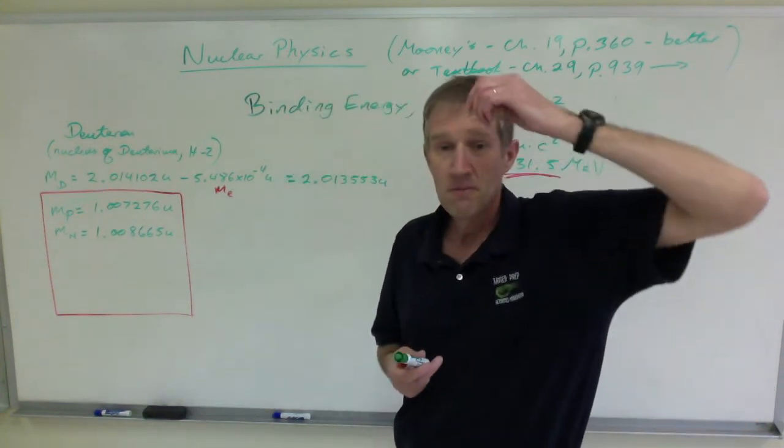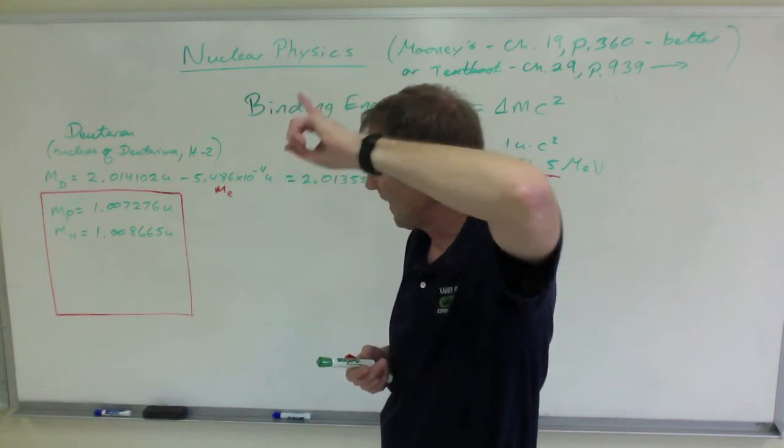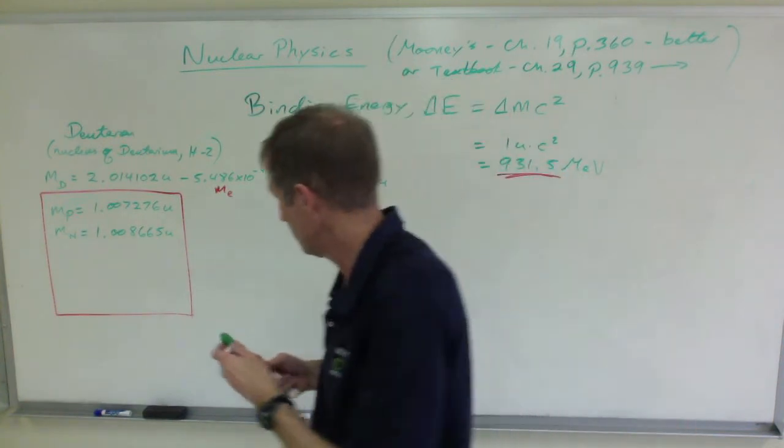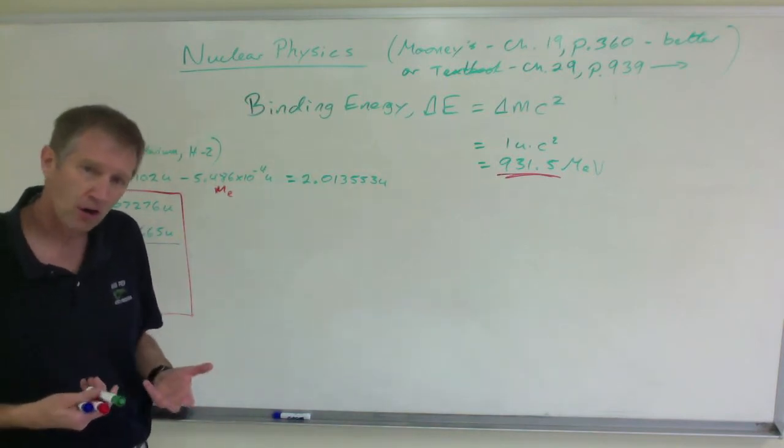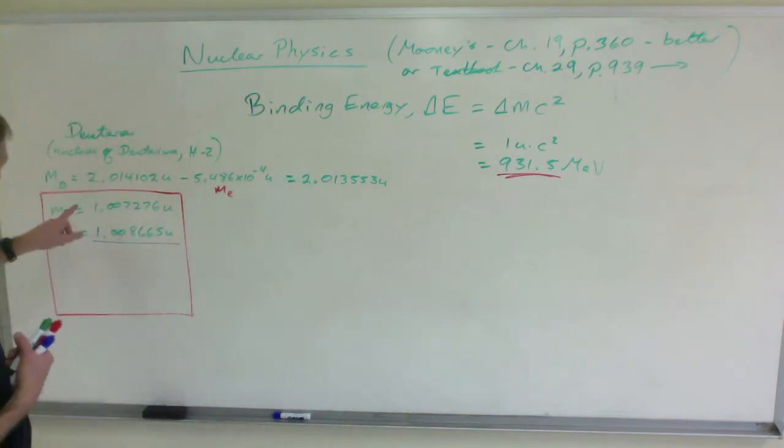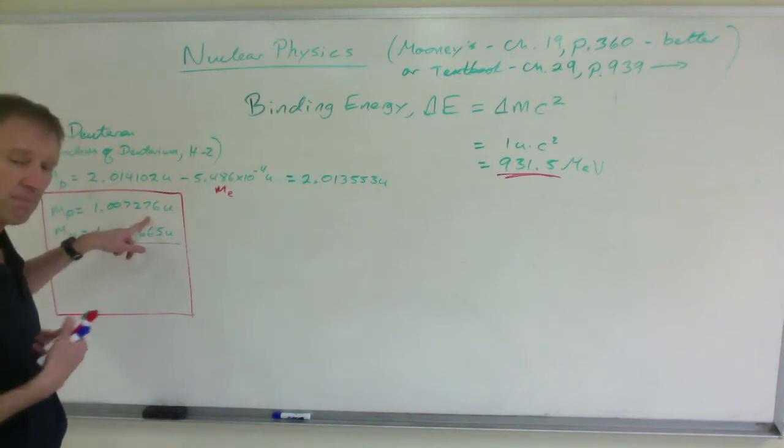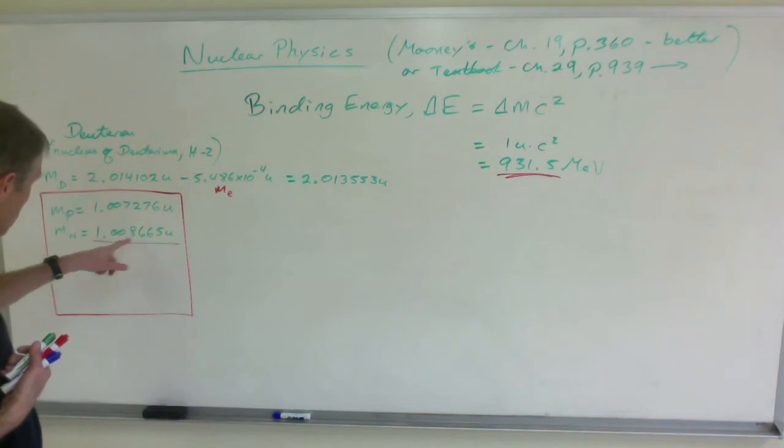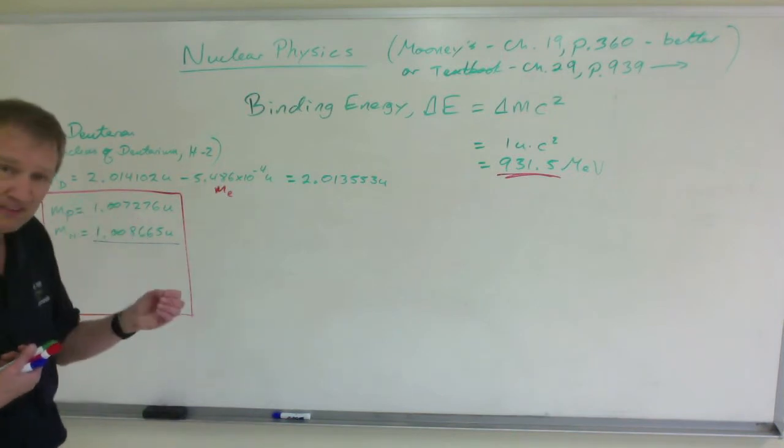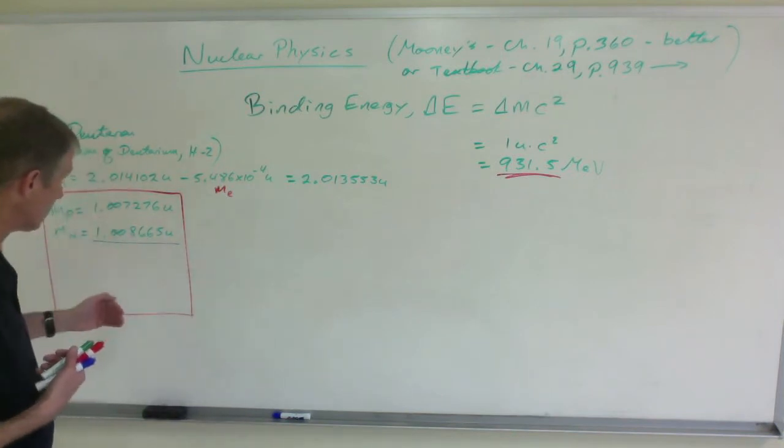Now, because deuterium has one of each of these things, I have to add these things up to figure out their total. Now, if this had been something like carbon-12, I'd have had six of these. And I'd have multiplied this by six to get the total mass of the protons. And I'd have multiplied, however many neutrons. If it's carbon-12, you'd have six neutrons. You'd multiply that number by six to get the total mass of neutrons, and then add those together.